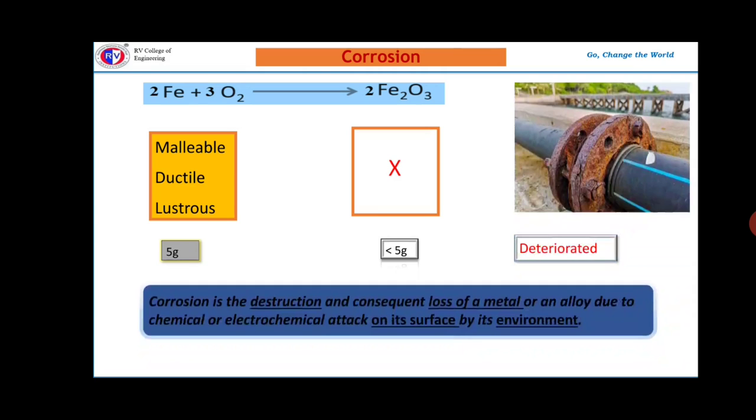Corrosion is the destruction or deterioration and consequent loss. Every time the metal loses its first layer, second layer like that. Corrosion is the destruction and consequent loss of a metal or an alloy due to chemical or electrochemical attack on its surface by suitable environment. Without suitable environment, the metal will not undergo corrosion.